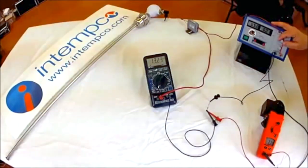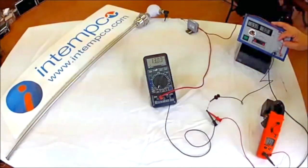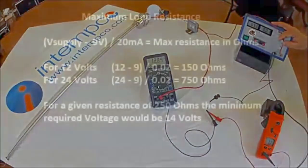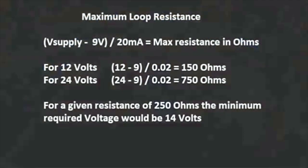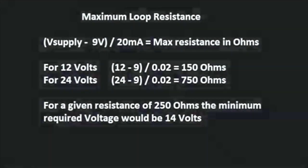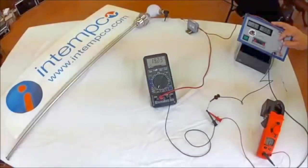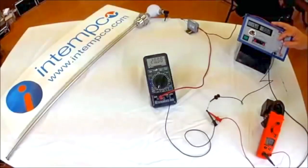Using this equation and working backwards, the minimum calculated voltage for a 250 ohm resistor would be 14 volts. I will now put the supply back to 15 volts.